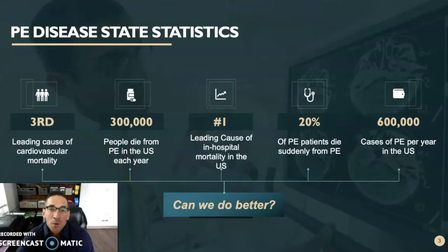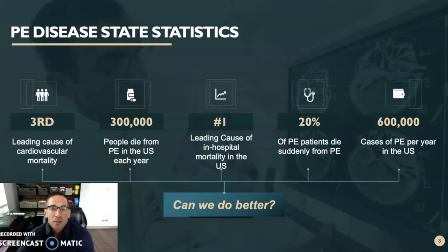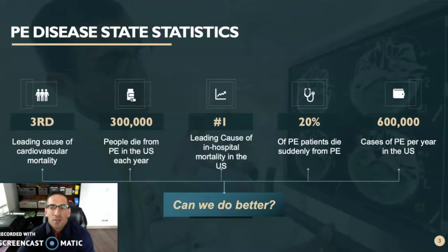PE has long been called the silent killer. Pulmonary Embolism occurs when a clot dislodges, typically from the deep vein in your lower limb, travels to the lungs, causes an arterial blockage, and ultimately leads to heart swelling.